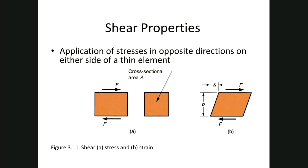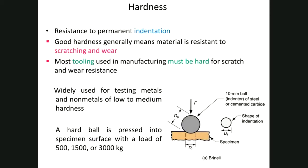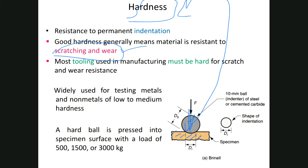Hardness is one of the most important material properties. It is defined as resistance to indentation or penetration — a hard ball is pressed into the specimen with a load of 500 to 3000 kilograms, and the resistance is measured. Hardness generally represents resistance to scratching and wear. Hard materials are used for cutting tools and drill tools because they resist wear and scratching.